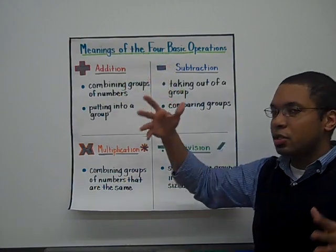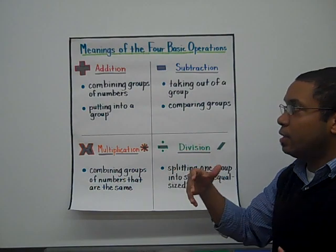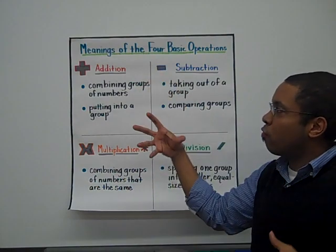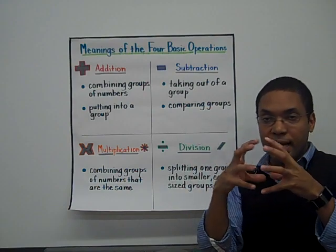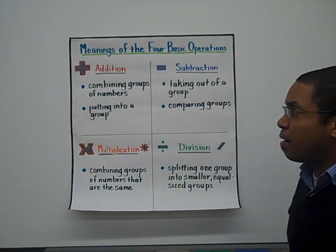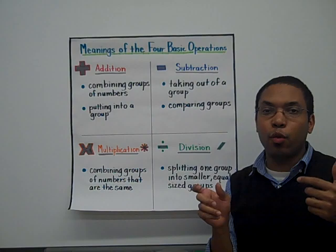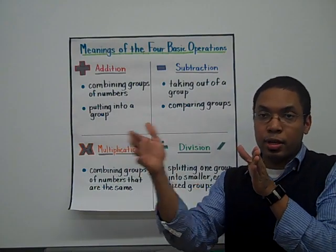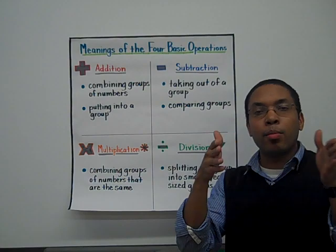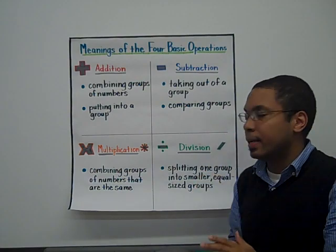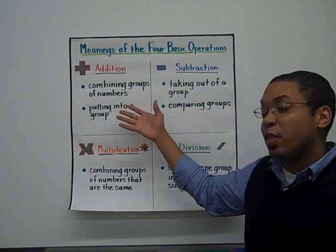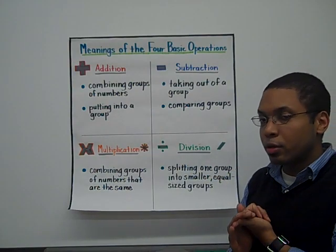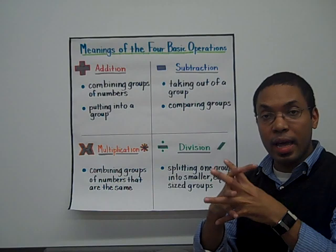The meaning of addition — what does addition really mean? Well, addition really means repeated counting. By that, I mean that we're combining groups of numbers together. So on a number line, if I had 6 plus 4, what I'd really be combining is the distance from 0 to 6, and then 4 more after that, which would get to the number 10. So addition means combining groups of numbers or putting things into a group.